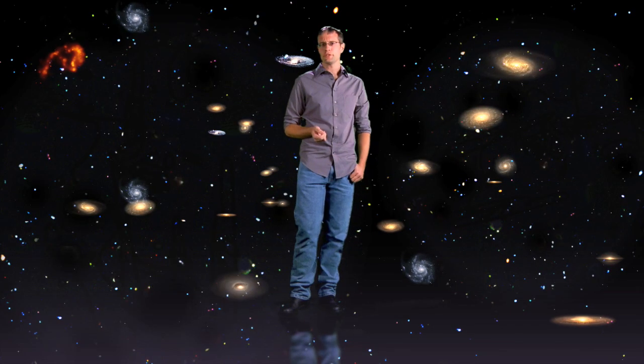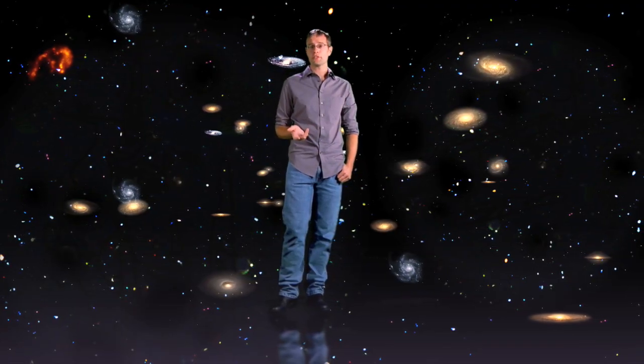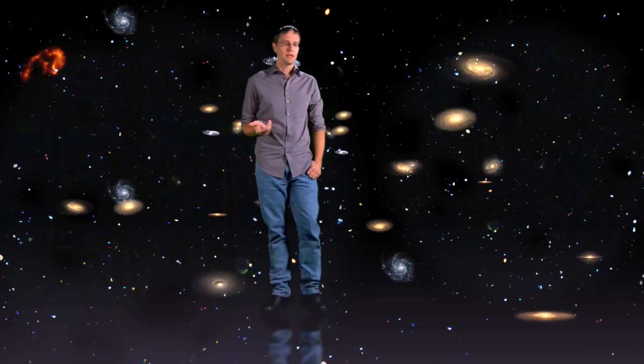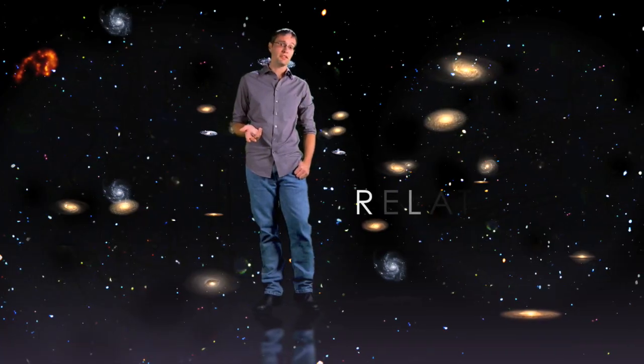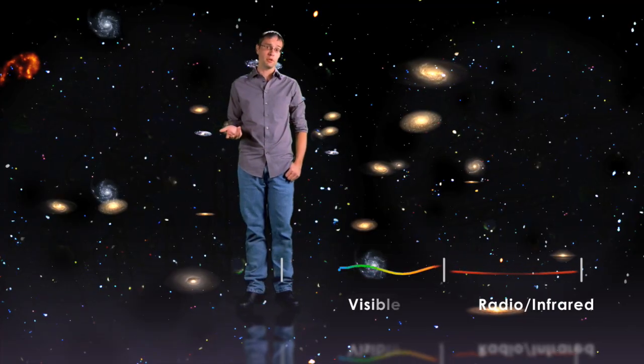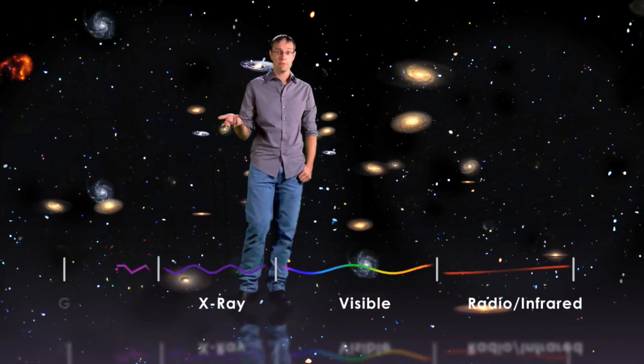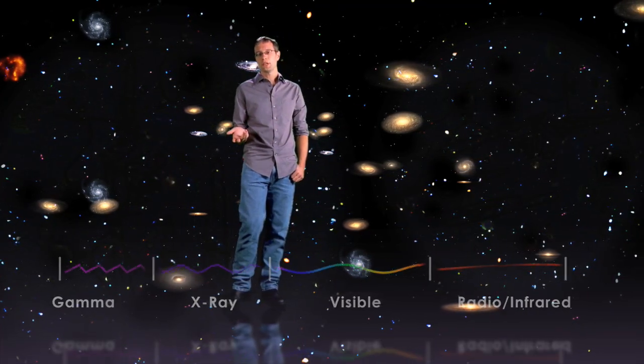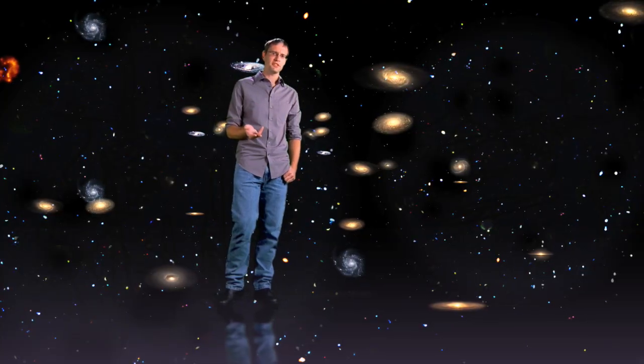To add to this puzzle, other telescopes have observed gamma rays with different wavelengths arriving at Earth at different times. According to Einstein's special theory of relativity, all forms of electromagnetic radiation, from radio and infrared, to visible light, to X-rays and even gamma rays, moves at the same speed. So what would explain these differences in arrival times?